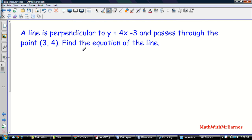Let's put it in action and try a couple examples. A line is perpendicular to y equals 4x minus 3 and passes through the point (3, 4). Find the equation of the line. If you look at this guy, this is in y equals mx plus b form, so the slope is 4.